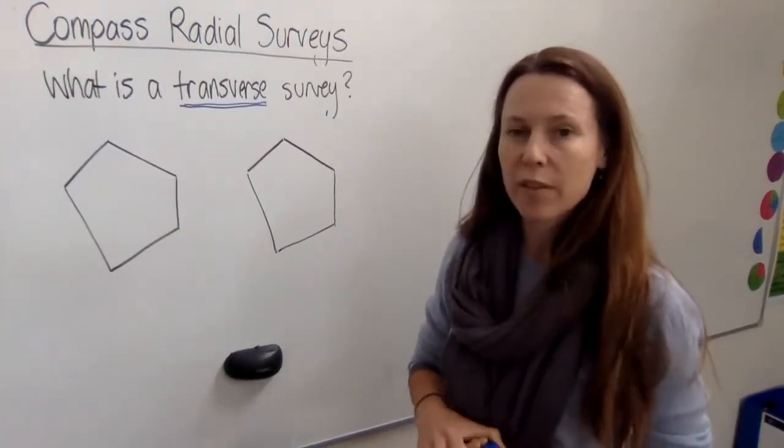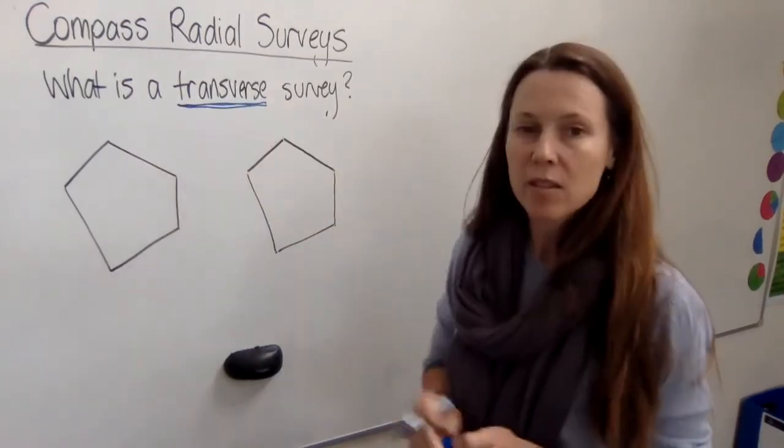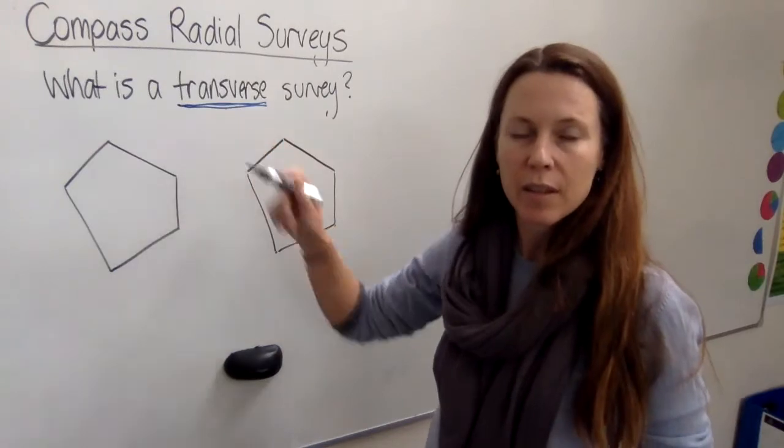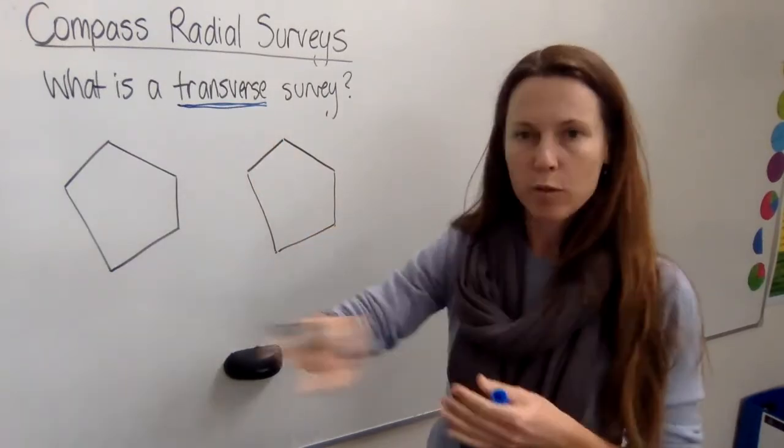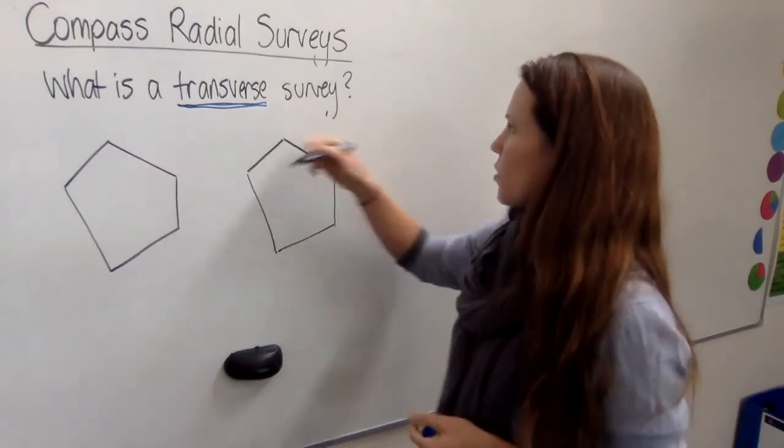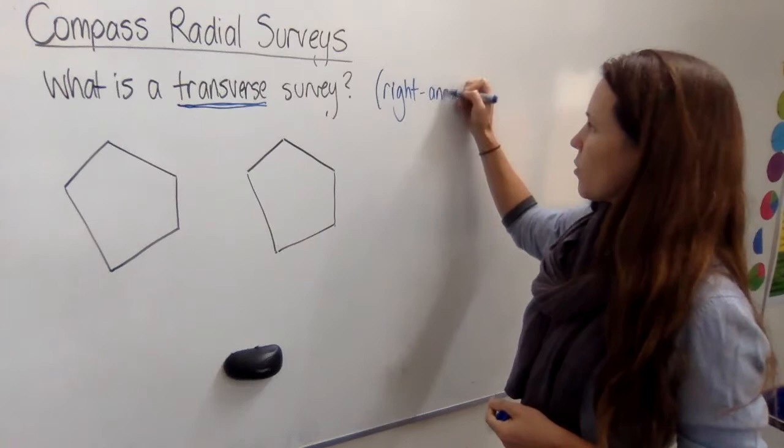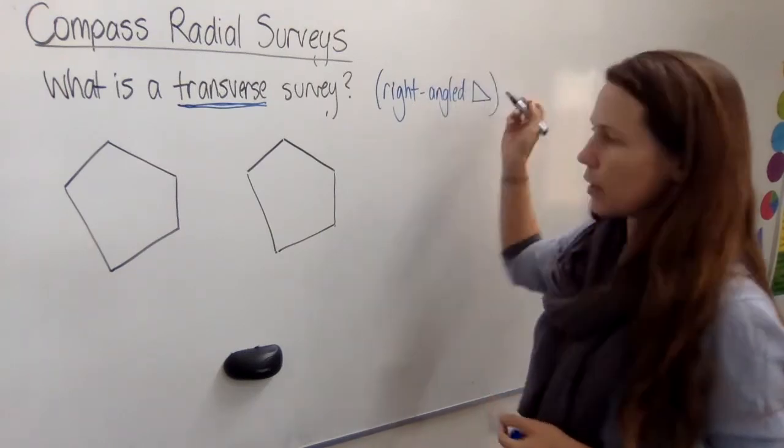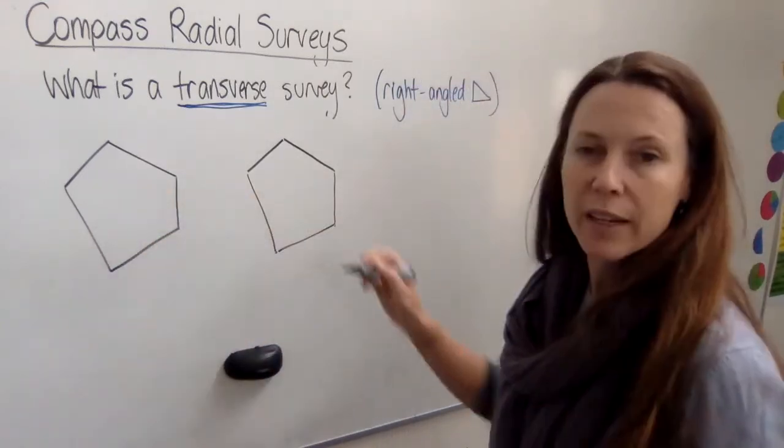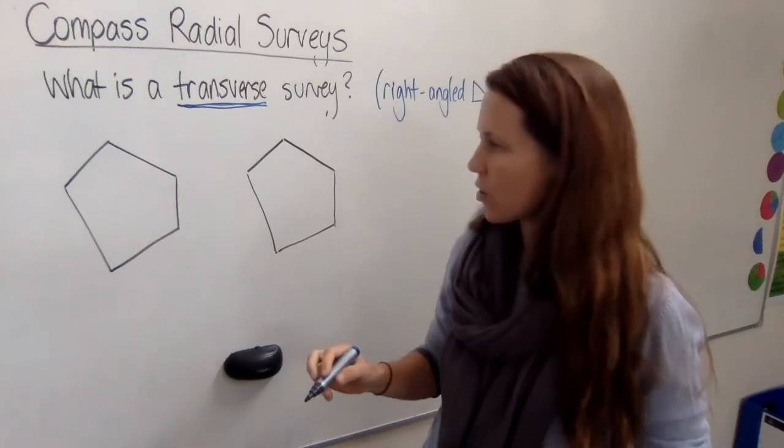Now while we're talking about compass radial surveys, you should be aware that there's another way to make a survey of a block of land, and that's to do a transverse survey. Now the easy way to remember this is to think transverse means something that goes across something. So using a transverse survey, it breaks everything basically down into right angle triangles, and you can do it a variety of ways. So I've drawn the same block of land here twice so I can show you an example of two different ways to make a transverse survey here.